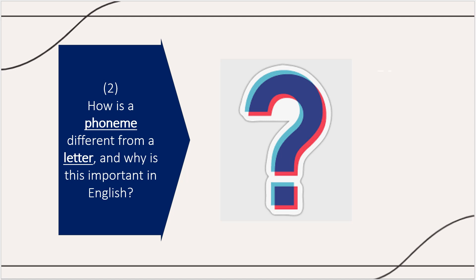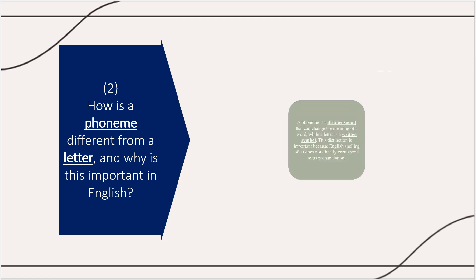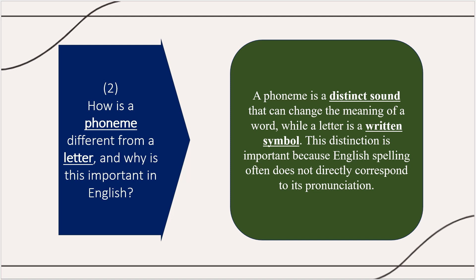How is a phoneme different from a letter, and why is this important in English? A phoneme is a distinct sound that can change the meaning of a word, while a letter is a written symbol. This distinction is important because English spelling often does not directly correspond to its pronunciation.